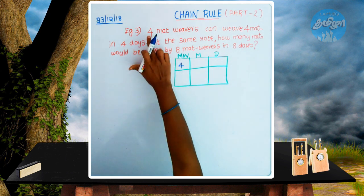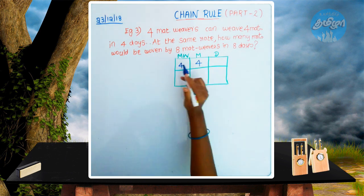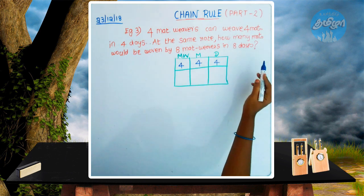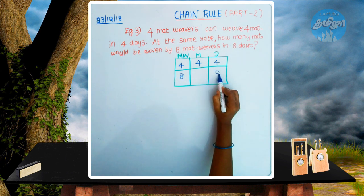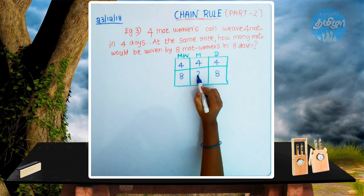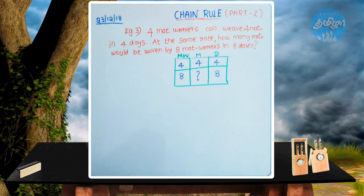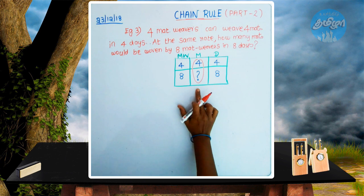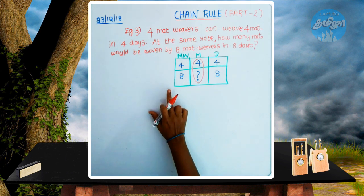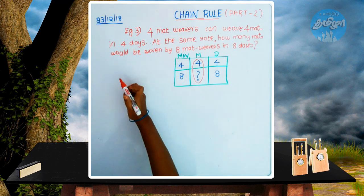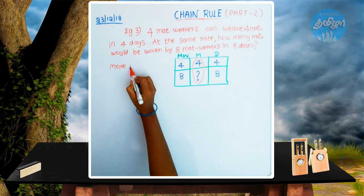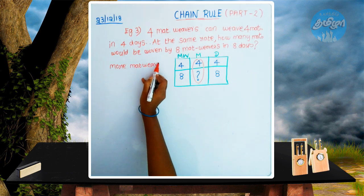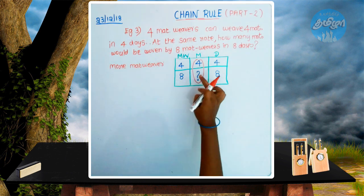You can do 4 mats in 4 days. Now, how do you check the conditions? If you want to check the mat, you can check the mat and the days. The mat weaver count is 4 or 8. If you want to check the mat, you can check it.